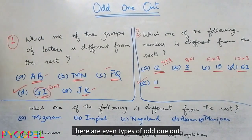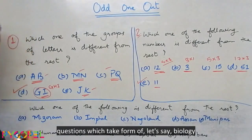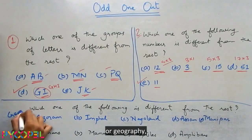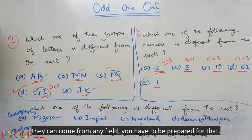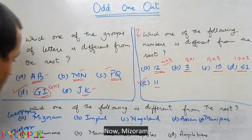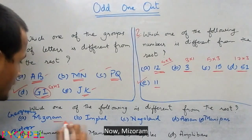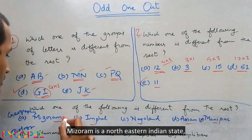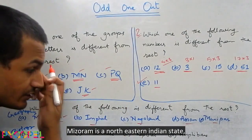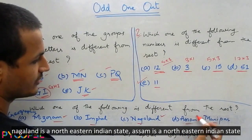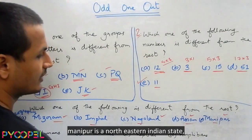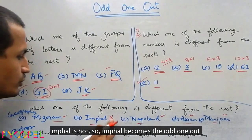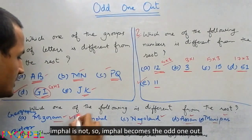There are even different types of odd one out in numbers, which can come from any field — biology, geography — you have to be prepared for that. For example: Mizoram, Imphal, Nagaland, Assam, Manipur. Mizoram, Nagaland, Assam, and Manipur are all northeastern Indian states, whereas Imphal is not — it is a city. So Imphal becomes the odd one out.